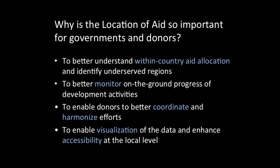There can be differences even within a country, or even within a city. Like a city like Malmö — there are differences across different parts of the city in income levels and so on. That's what the World Bank works with. I'm going to talk about why the location of aid is so important for governments and aid donors: to better understand within-country aid allocation, how aid is distributed within a country, to identify underserved regions, and to better monitor on-the-ground progress of development activities.